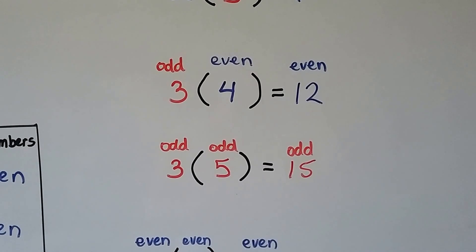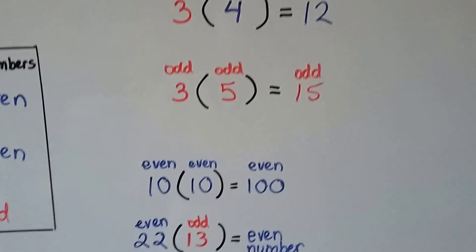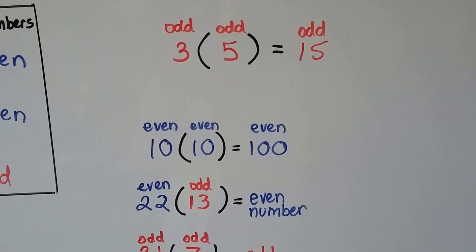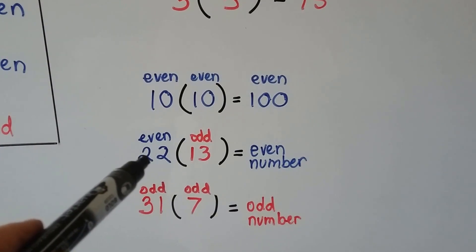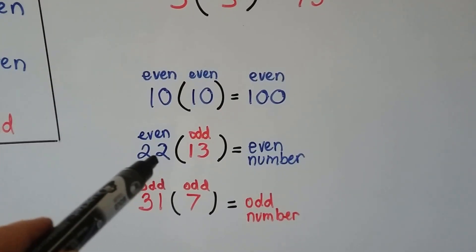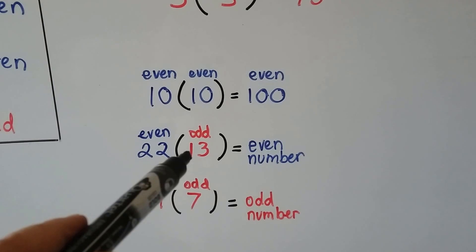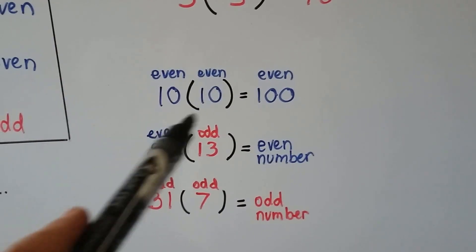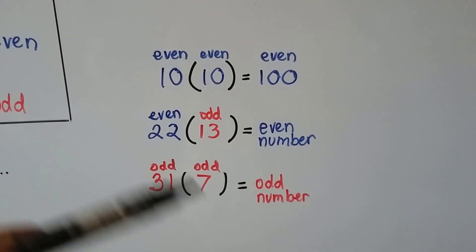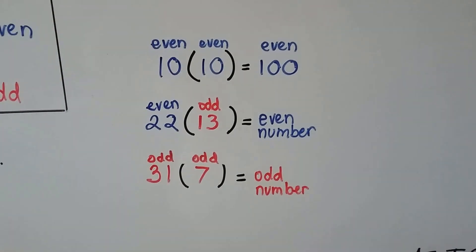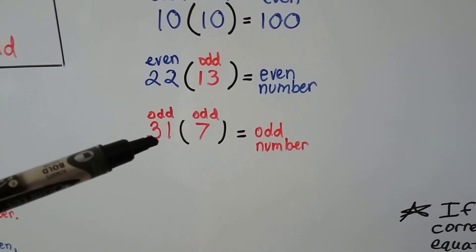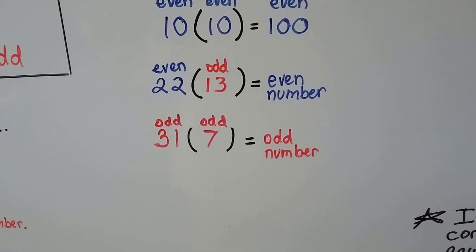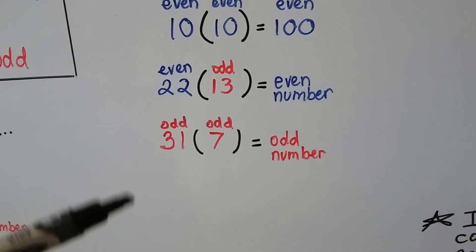But when we multiply an odd times an odd, we get an odd. For example, 10 is even — if we multiply 10 times 10 we get an even answer: 100. Now, 22 is an even number; it's got a 2 in the ones place. 13 is an odd number; it's got a 3 in the ones place. We multiply them together and we get an even number — we don't even know what it is, but we know it has to be even. An odd number like 31 multiplied by an odd number like 7 gives us an odd product.